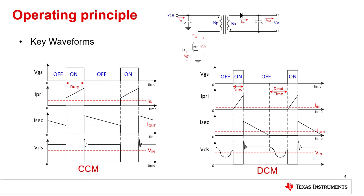Looking at DCM, the only difference to CCM is that the transistor turns on while there is no current in the transformer, as it decays to zero when flowing in the secondary winding. When there is no current in the transformer, parasitic ringing can be observed at the drain-to-source voltage of the transistor.